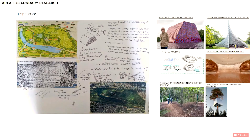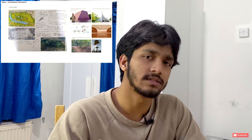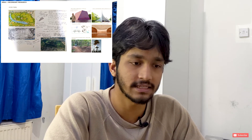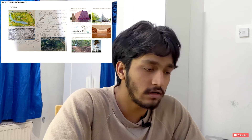Then I did some area and secondary research. This is the stage where I spent a lot of time selecting which area I wanted to design in. I ended up spending two or three days deciding where I wanted to place the structure. I decided to make a list of places I like to visit or visit frequently here in London with my friends or family.